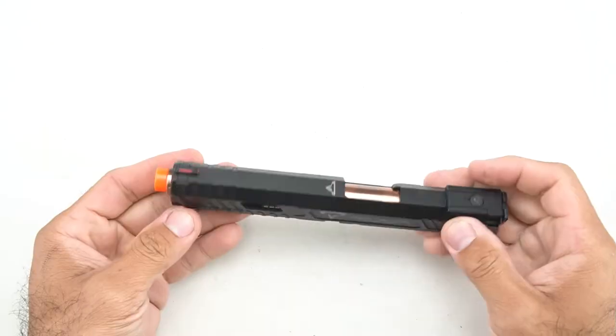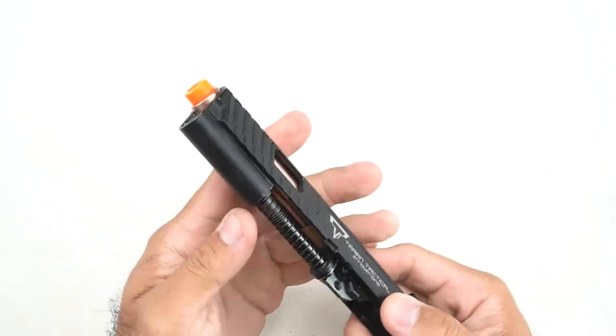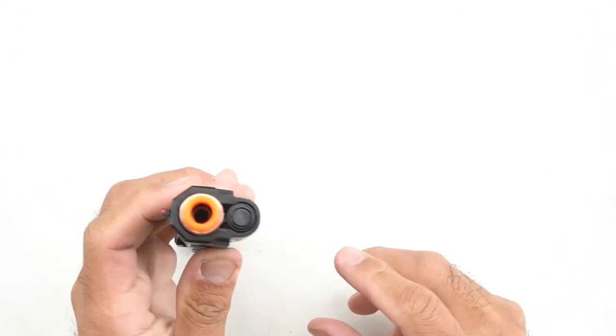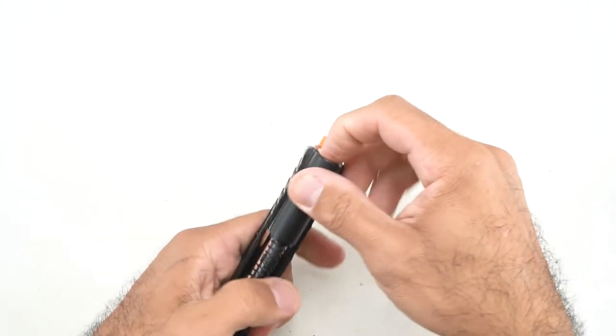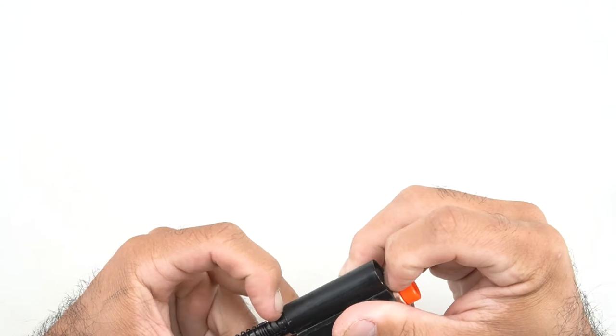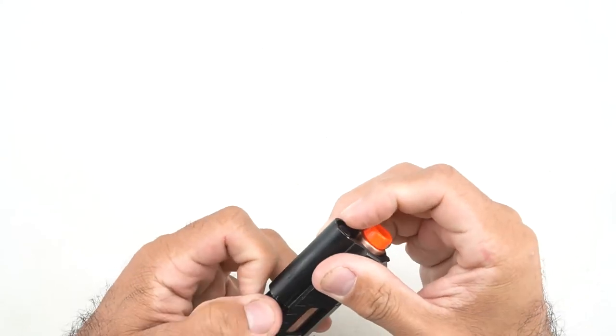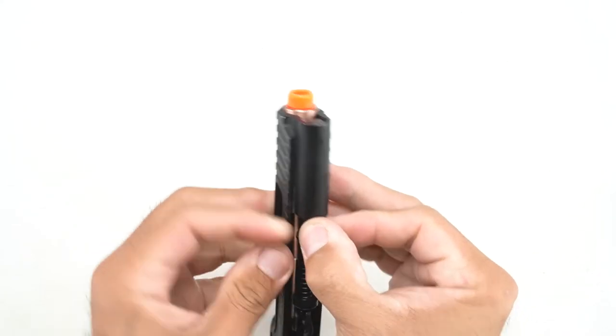And the slide comes right off. Now with the slide off, we're going to take the guide rod out. And that has the recoil spring assembly and the spring plug. The plug only comes out one way towards the back of the slide.